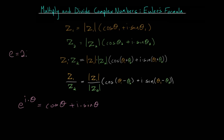Here, e — the base of this exponential function — is equal to 2.71828, and this number is irrational, it'll go on forever. i, we know, is the square root of minus one. And from this equation, we get the interesting result that when theta is equal to pi, then e to the i times pi is equal to the cosine of pi, which is negative one, plus i times the sine of pi.